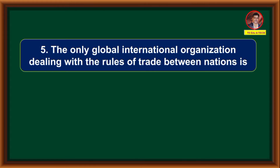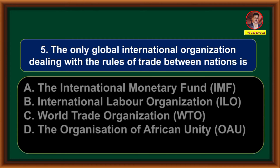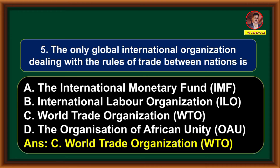The only global international organization dealing with the rules of trade between nations is: Option A: International Monetary Fund (IMF). Option B: International Labour Organization (ILO). Option C: World Trade Organization (WTO). Option D: Organization of African Unity (OAU). Correct answer is Option C — World Trade Organization.